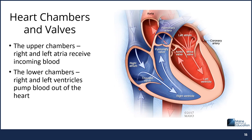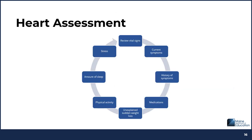The heart is made up of chambers and valves that hold blood in certain areas as the heart contracts. The upper chambers, the right and left atria, receive incoming blood. The lower chambers, the left and right ventricles, pump blood out of the heart. In a cardiac exam, similar to the respiratory exam, you will combine information from both a subjective and objective assessment.